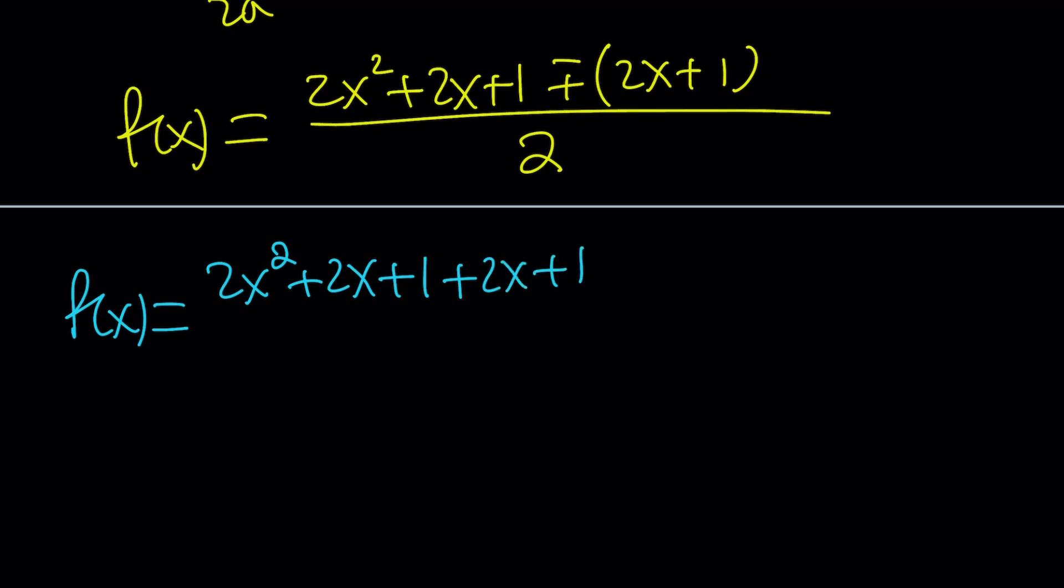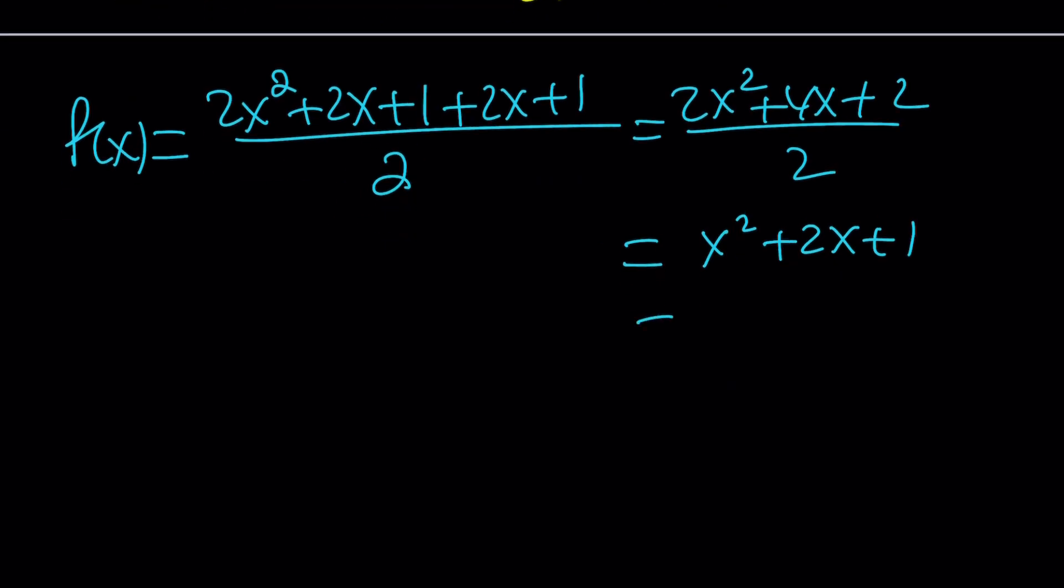2x squared, I'm going to write 2x squared plus 2x plus 1, and then with that plus 2x plus 1 divided by 2. If you simplify this, you're going to notice that this becomes 2x squared plus 4x plus 2 divided by 2, which is equal to x squared plus 2x plus 1, and then you can write it as x plus 1 squared. So f of x becomes x plus 1 squared from here. That's one of the solutions.